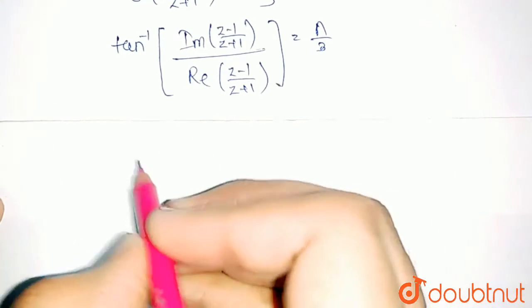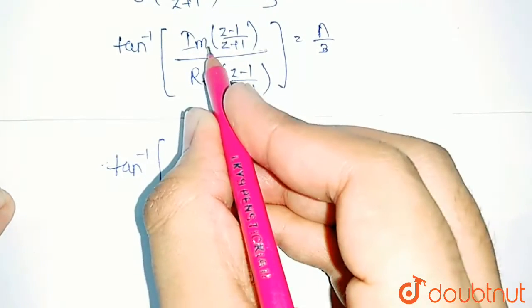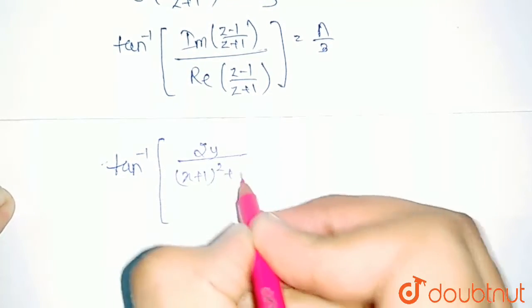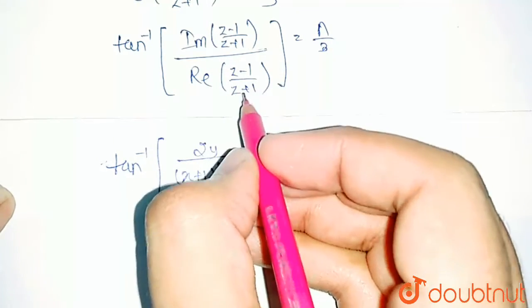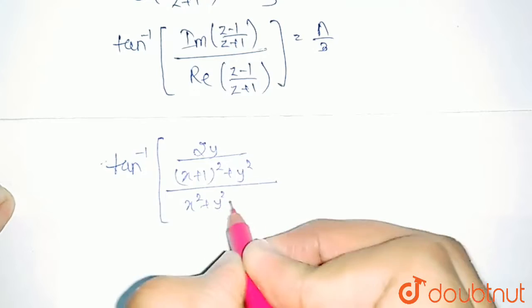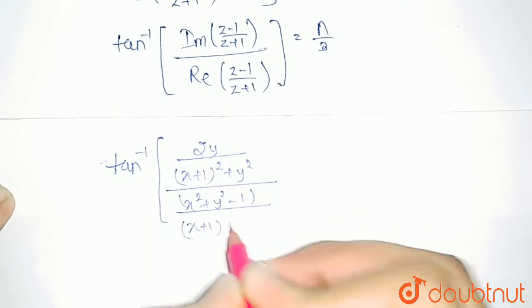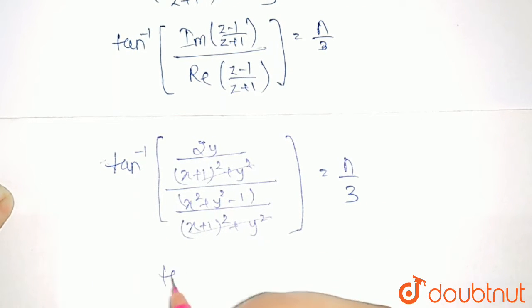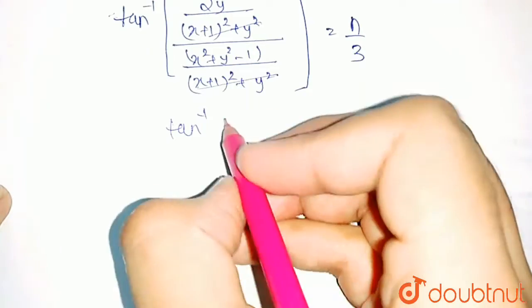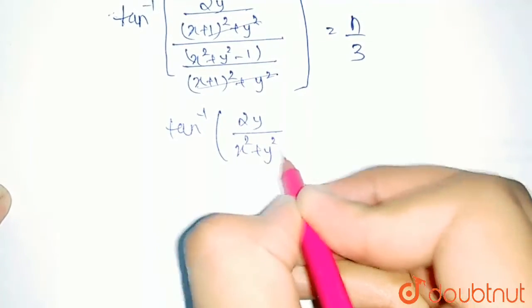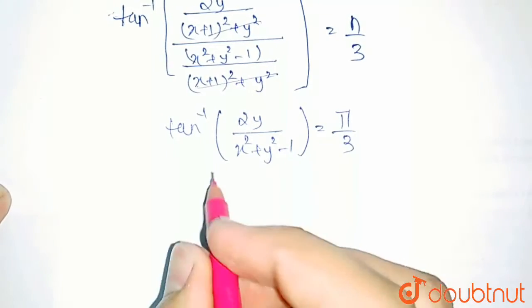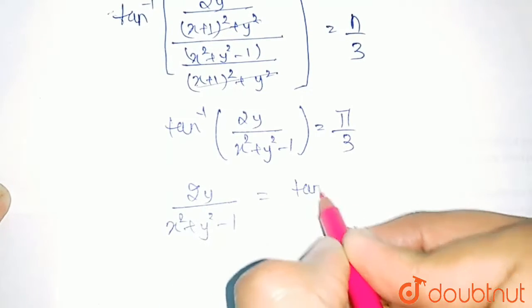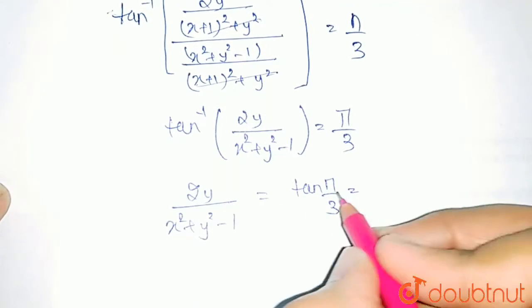So we get tan inverse of: the imaginary part 2y divided by (x plus 1) whole square plus y squared, completely divided by the real part (x squared plus y squared minus 1) divided by (x plus 1) whole square plus y squared, equals pi by 3. The denominators cancel, giving tan inverse of 2y upon (x squared plus y squared minus 1) equals pi by 3. Taking tan on the right-hand side: 2y upon (x squared plus y squared minus 1) equals tan(pi by 3), which is tan 60°, which is root 3.